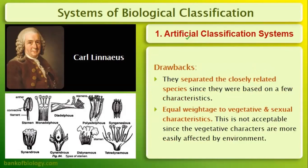What were the drawbacks of the artificial system? The drawbacks were that it separated closely related species, because in morphological characters it is not necessary that every closely related species has the same morphological characters. But since it was the first attempt, it was on a very low standard. After improving it, we get something better, so the drawbacks are actually important for progress.